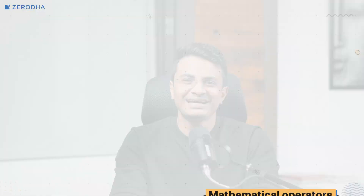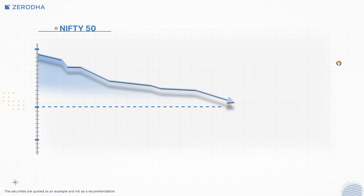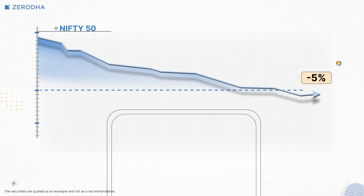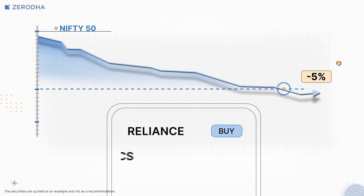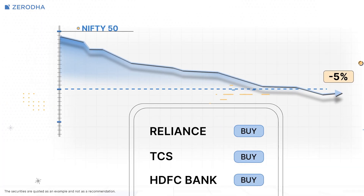Now let's create an ATO for the following conditions: if the Nifty50 index falls by 5%, place buy orders for Reliance, TCS, and HDFC Bank.